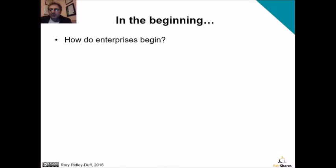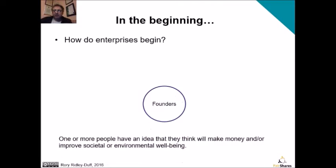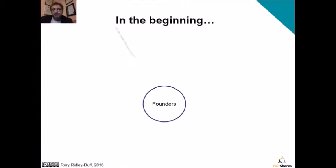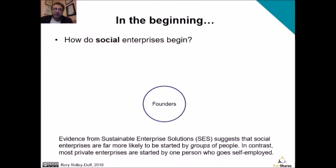So how do enterprises begin? All enterprises start with one or more people who have an idea that may make them money, but certainly if you're a social entrepreneur, will improve society, the community, or the environment. Social enterprises based on available research suggest they are far more likely to be started by groups of people, often six to eight people. In contrast, private enterprises are usually started when a single person goes self-employed or maybe two people go into partnership.